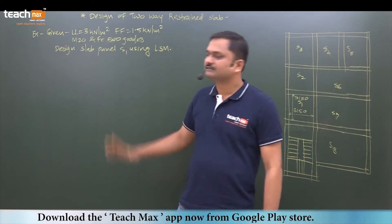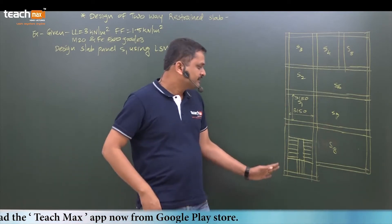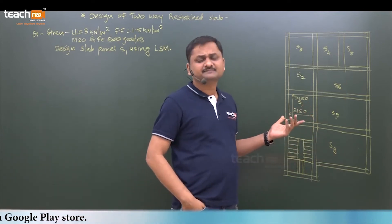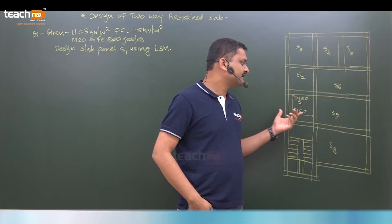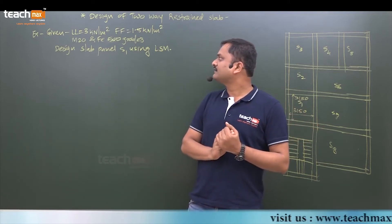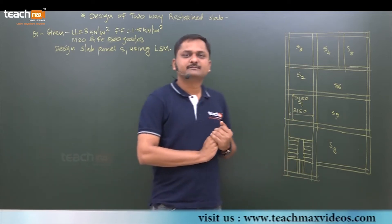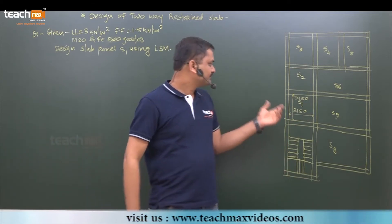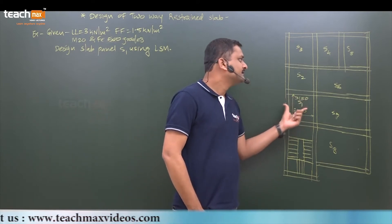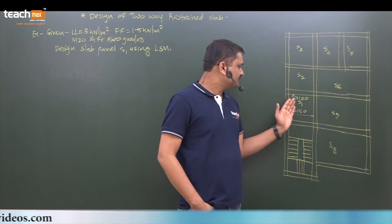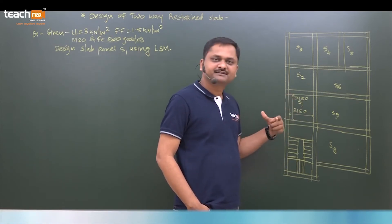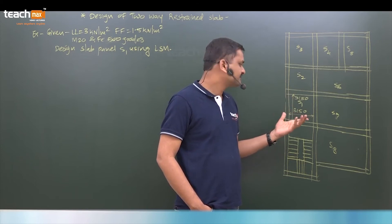Here the example is given. Generally a floor plan is given from which you can easily understand the configuration. It is asked to design slab panel S1 by using the limit state method of design. This is the S1 panel of the floor system. The dimensions given are 3150 × 3150.